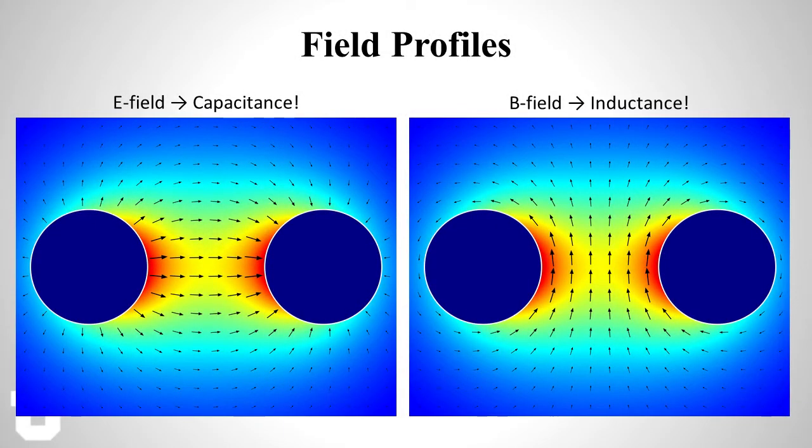So this next slide shows a visualization of those exact fields and they've been normalized to fill the color gradient. Focusing on the electric field on the left you see there's some net positive charge on the left and net negative charge on the right. The separation of charges means that there are some electric fields between them and since there is some potential difference between those two conductors you can imagine that by definition this implies capacitance.